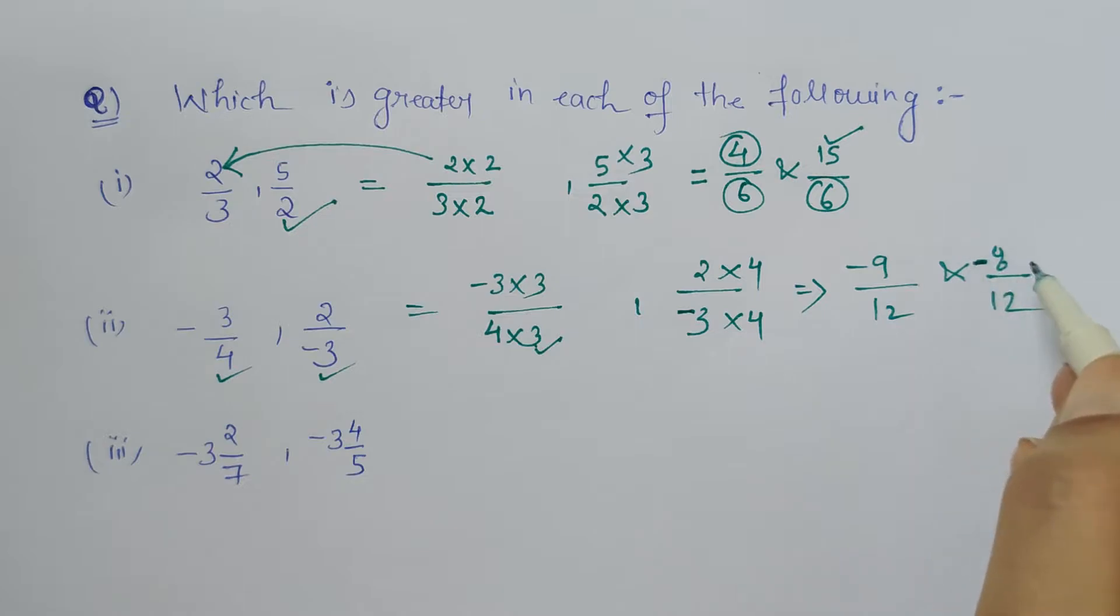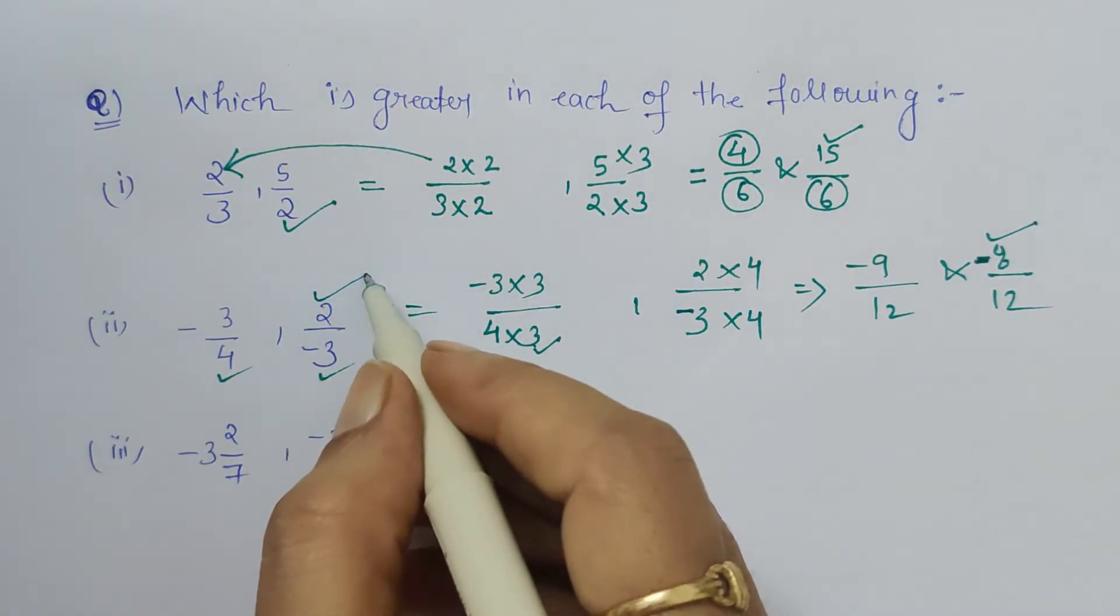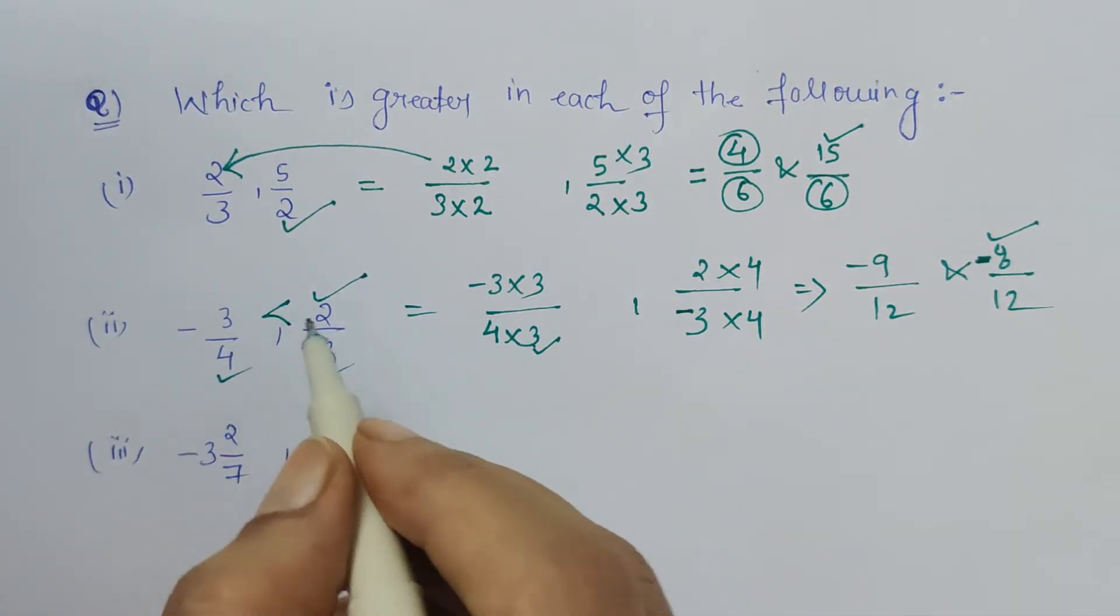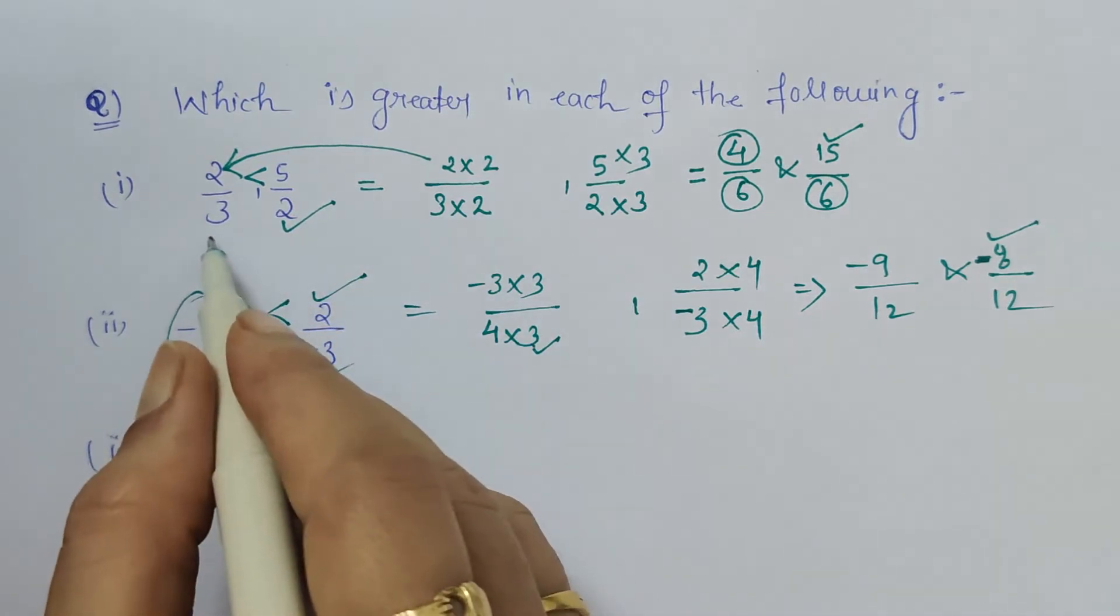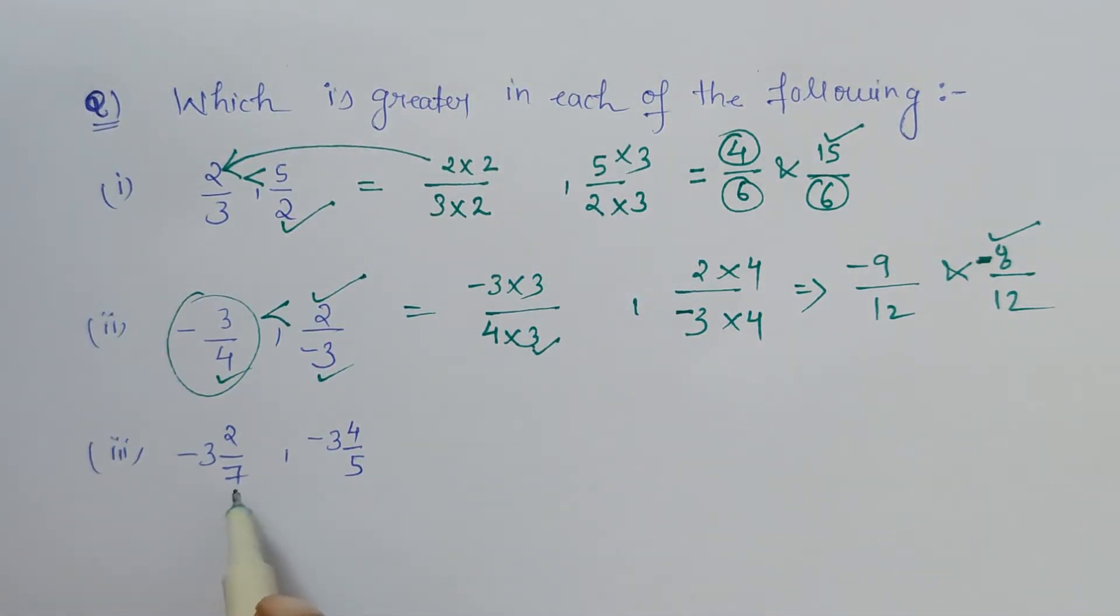This negative is never in denominator, so we have written it in the numerator. As we know, a number having a smaller integer with negative sign is greater, so this is greater. That means minus 2 by 3 is greater than minus 3 by 4. And in this case, 5 by 2 is greater than 2 by 3.